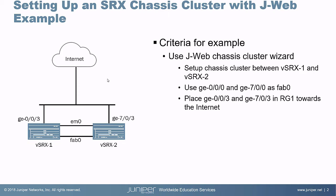The criteria for our example: we want to use the chassis cluster wizard in J-Web, set up a chassis cluster between VSRX1 and VSRX2, use Gigi000 and Gigi700 as the Fab0 interface, and place Gigi003 and Gigi703 in RG1, which is towards the internet. Let's go ahead and jump to the J-Web interface.